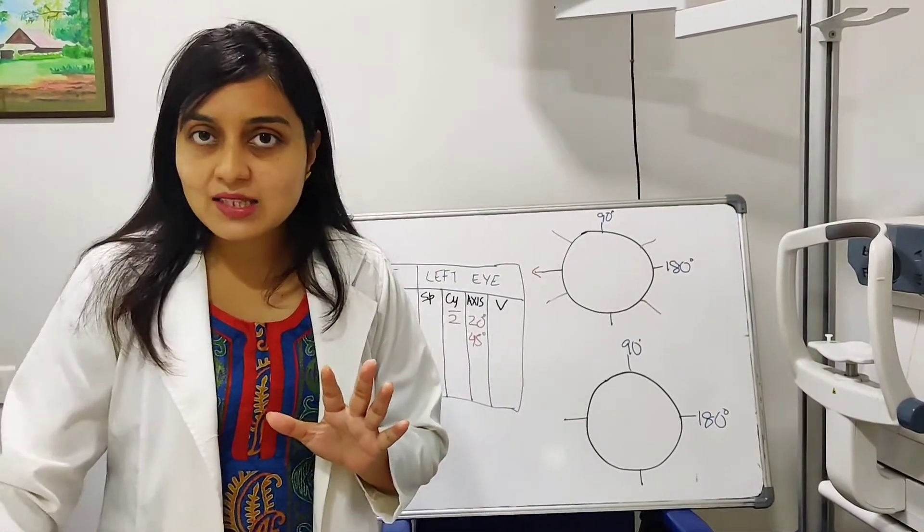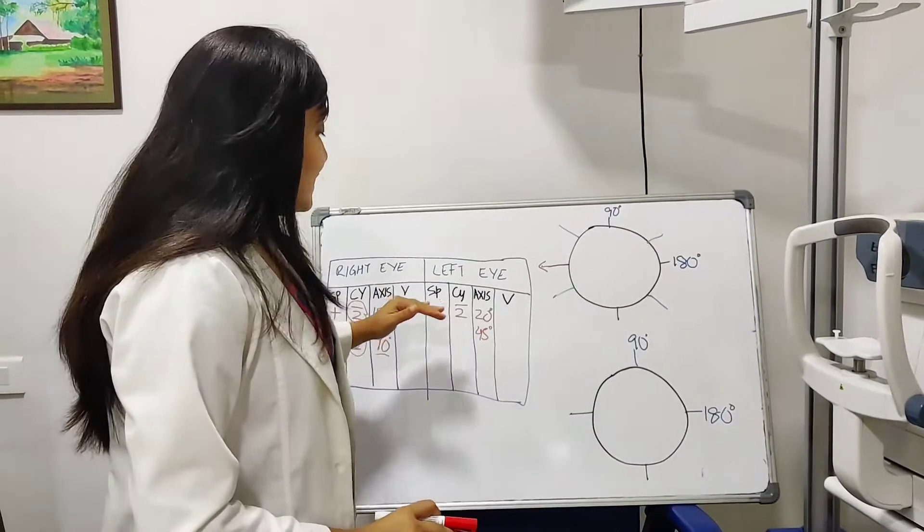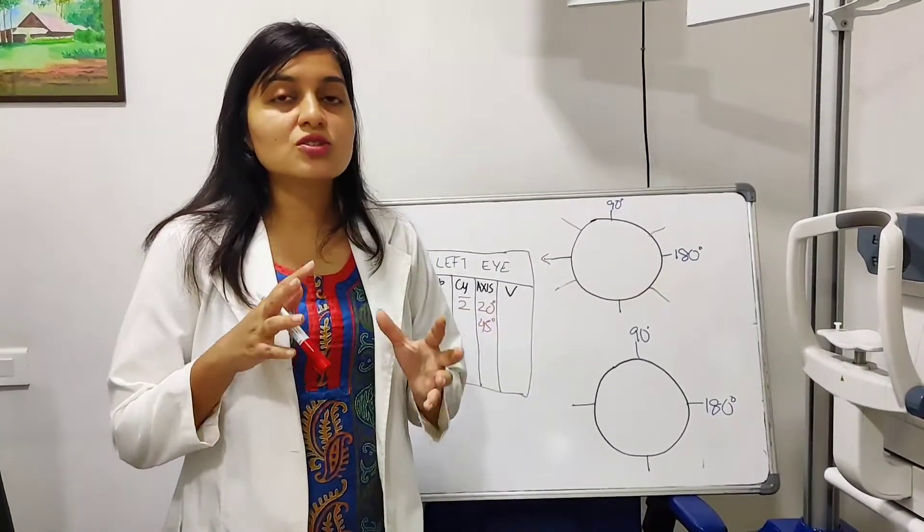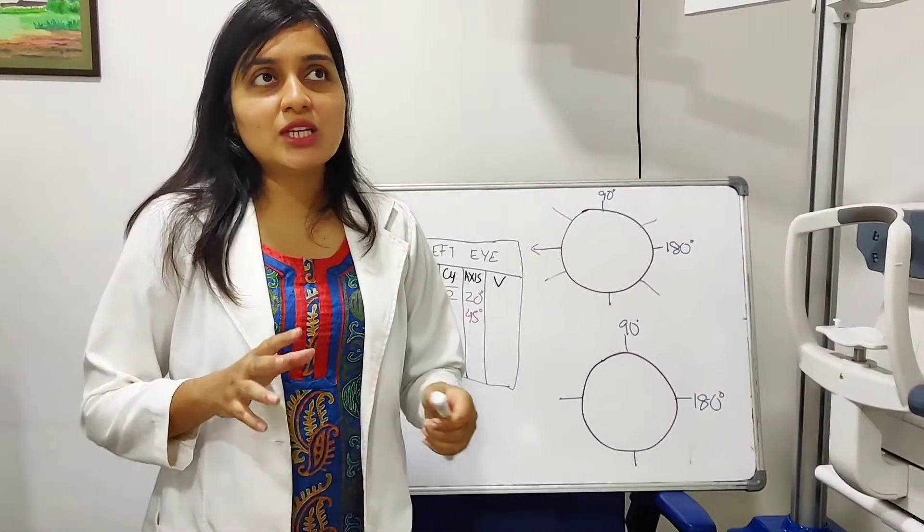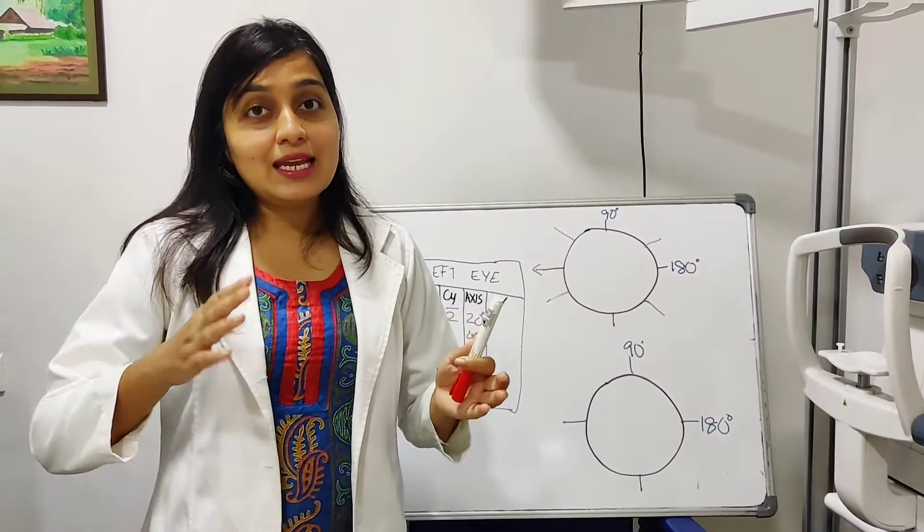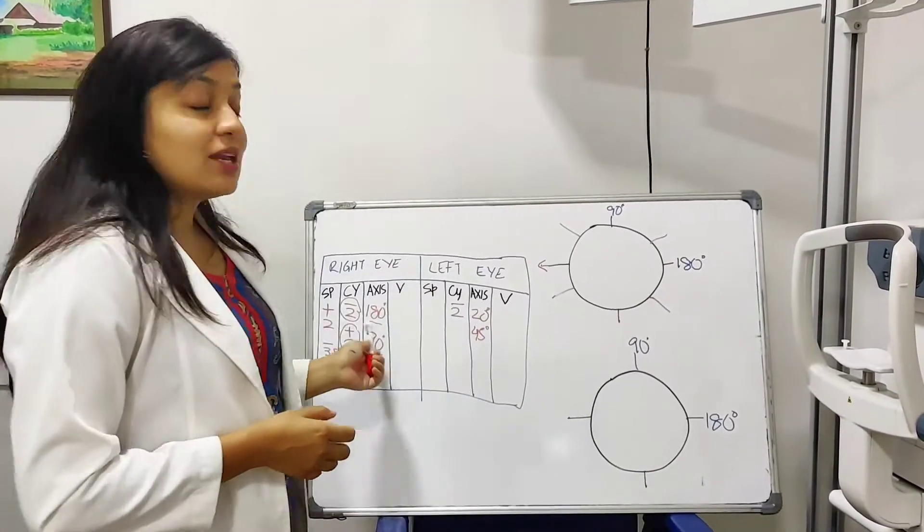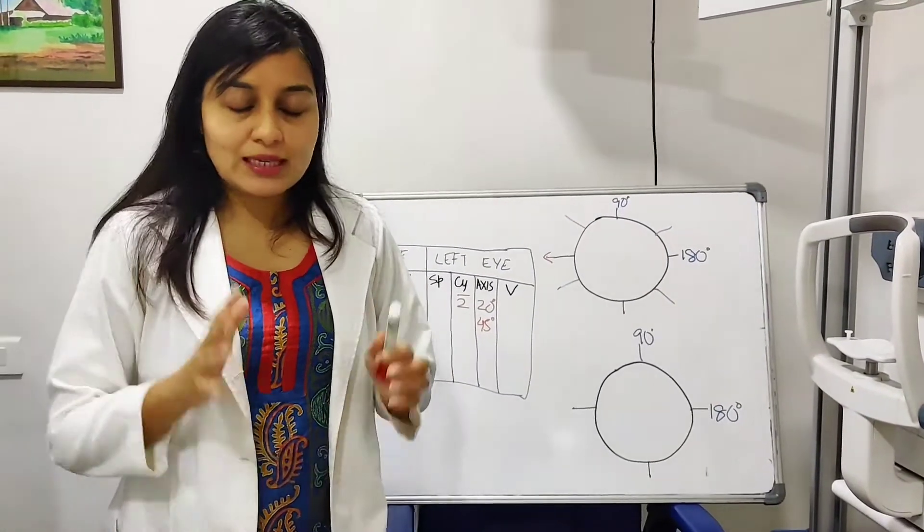Generally, this axis does not change and the minus, the number also does not change very much through your life. It would maximum change up to the age of 8 to 10. Again, not like myopia which can go up till 18 years or so.